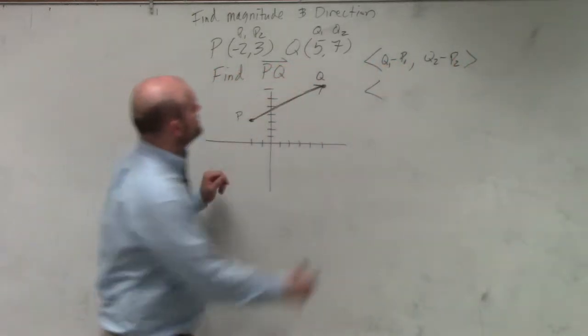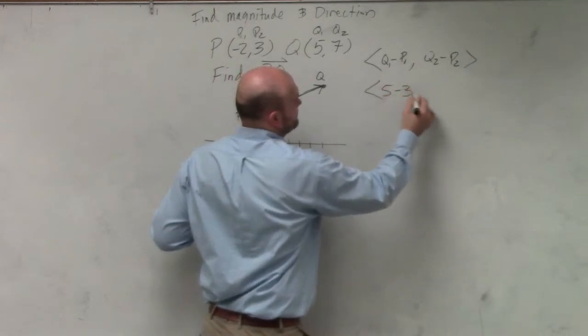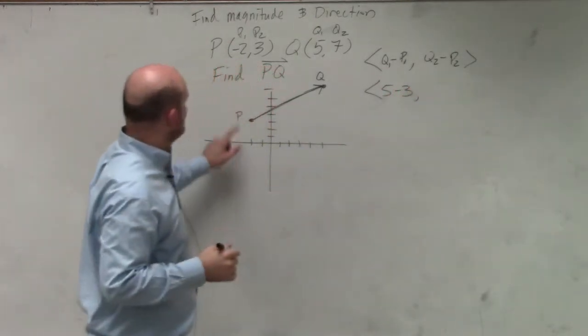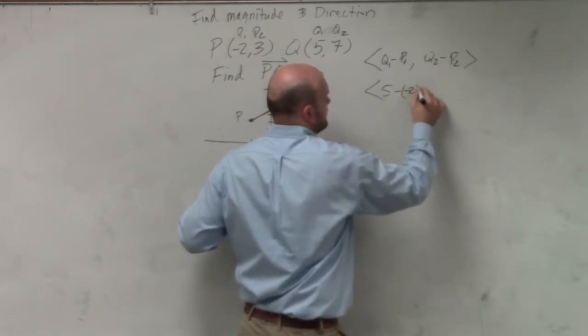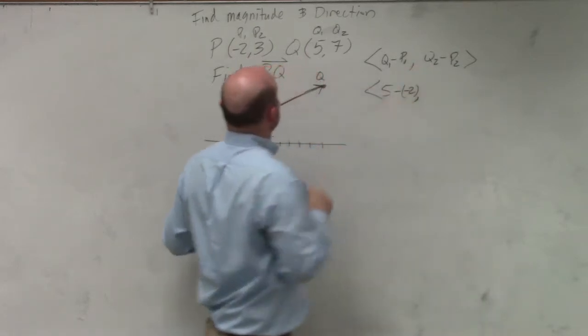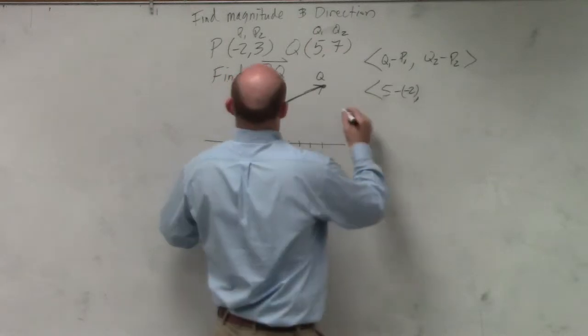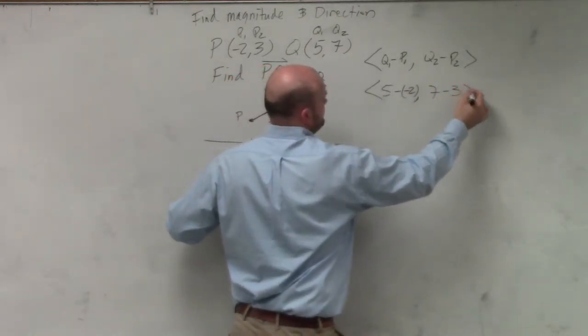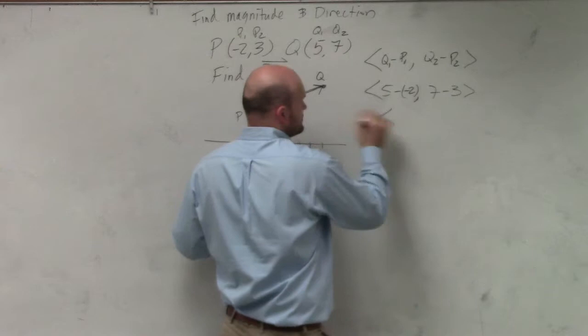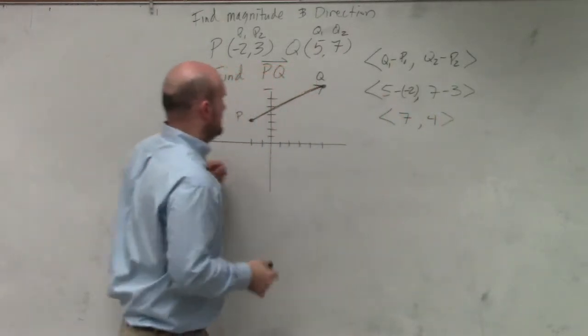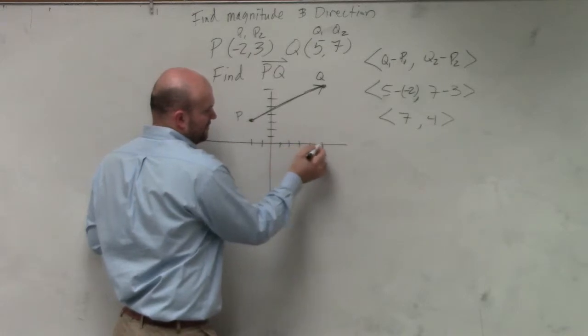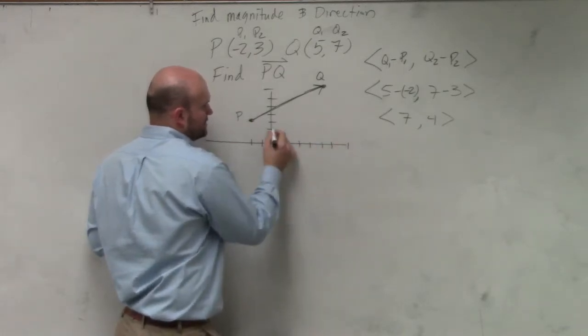So therefore, this is 5 minus negative 2, and then this becomes 7 minus 3. So we would have 7 comma 4. So now let's plot this: 1, 2, 3, 4, 5, 6, 7, and 1, 2, 3, 4.